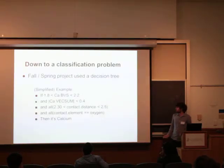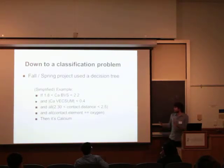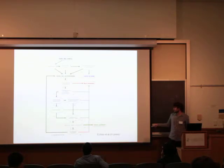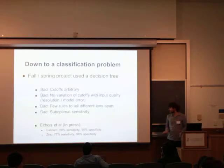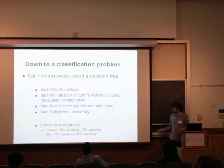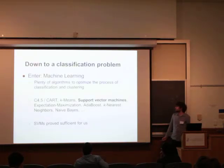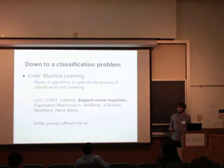My fall and spring project was to create loosely-defined rules that say, if a value is between these numbers, then it's some particular metal. The problem was that the cutoffs were arbitrary, and it didn't give very good sensitivity — it missed things and couldn't tell the difference between different ion identities. So I started looking at machine learning algorithms, which are processes to automatically find the optimal classifier.